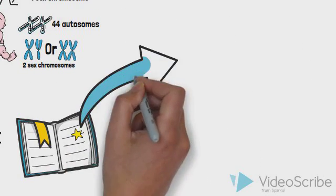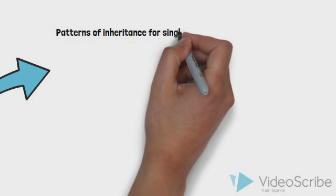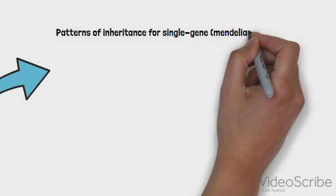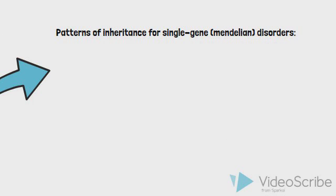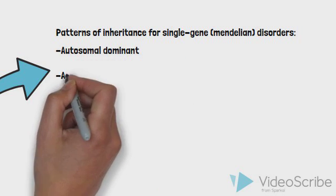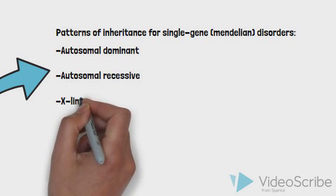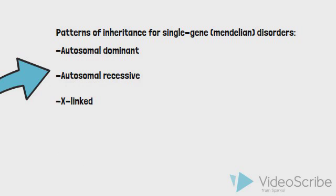Diseases caused by disease-causing gene variants, or pathogenic alleles, at a single location in the genome are referred to as single gene disorders. These are typically categorized according to predictable patterns of Mendelian inheritance. Patterns of inheritance are defined according to the type of chromosome the pathogenic allele can be found on, and whether one or two copies of the allele are required for disease expression. The most common patterns of Mendelian inheritance are autosomal dominant, autosomal recessive, and X-linked inheritance.